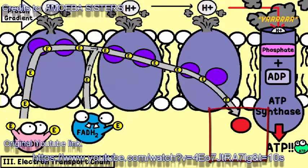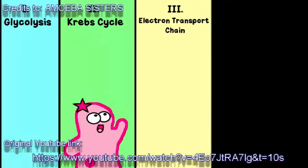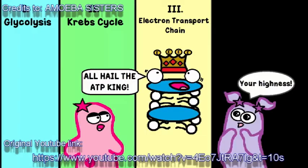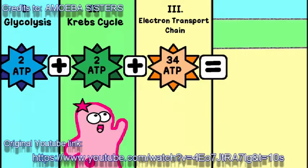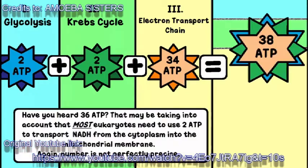Oxygen is the final acceptor of these electrons, and when you have an oxygen molecule combining with two protons, you get H2O, which is water. So water is a product as well. The electron transport chain produces a lot of ATP compared to the other two steps — it's all because of that ATP synthase. Many textbooks will say that this step makes 34 ATP, meaning that the net amount of ATP when you add all three steps would be 38 ATP.